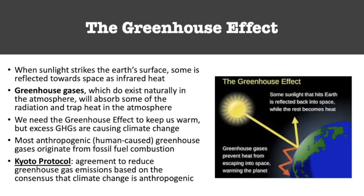Greenhouse gases are primarily going to originate from human causes — they are anthropogenic. Usually this source is going to be fossil fuel combustion. We burn fossil fuels, we produce carbon dioxide, which is a major greenhouse gas. One of the laws you should be familiar with for this class is the Kyoto Protocol, which specifically addresses the greenhouse effect. It is the agreement to try to reduce greenhouse gases worldwide based on the fact that the majority of them are being produced by humans.